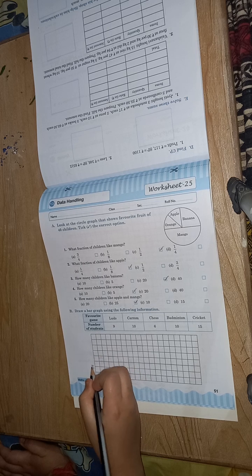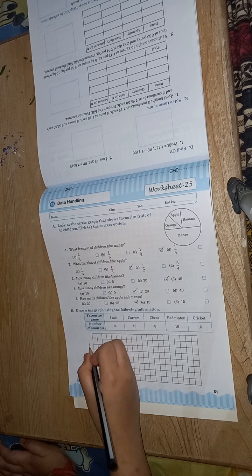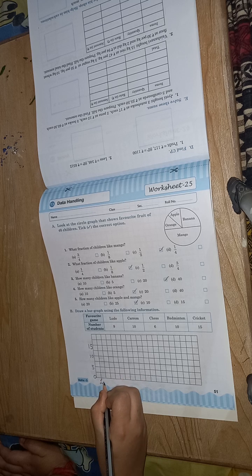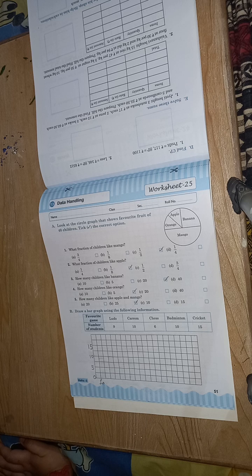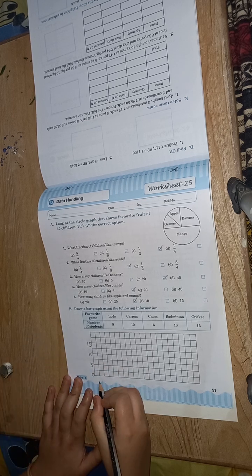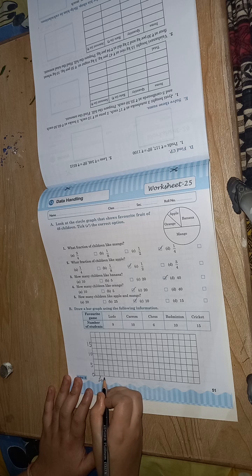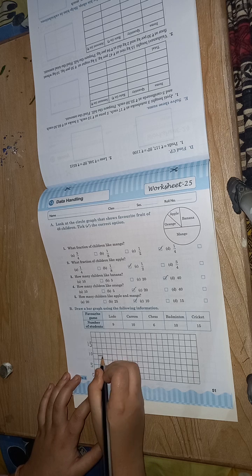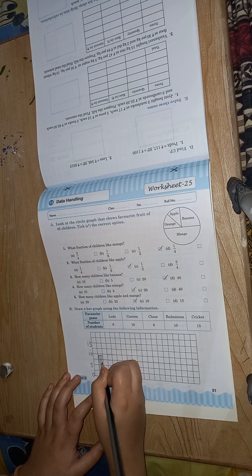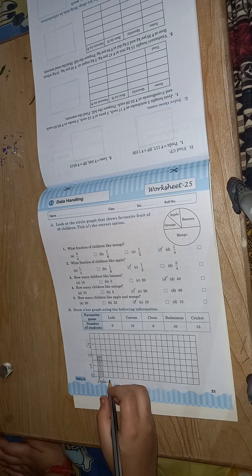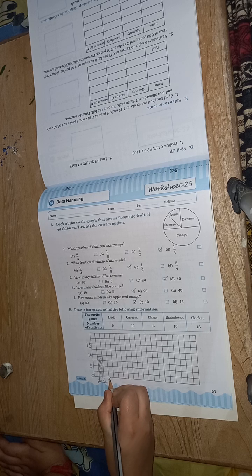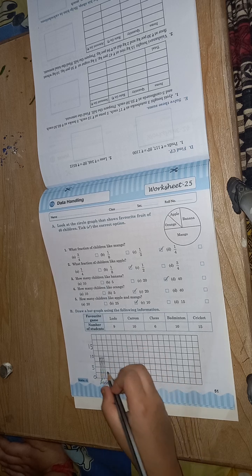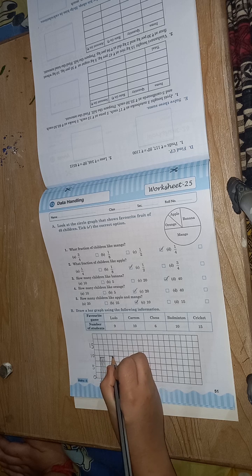Zero, five, ten, fifteen. Ludo, nine. One, one, one, one, one.